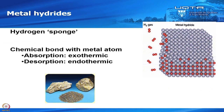Just a quick recap on what metal hydrides are — you could consider metal hydride to be like a kind of hydrogen sponge. In a metal hydride you have a chemical bond with the metal atom and hydrogen, the absorption is an exothermic reaction, and the desorption is an endothermic reaction.